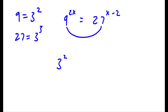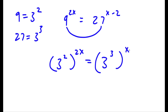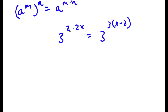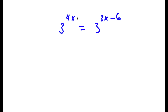So now I get 3 to the power of 2 to the power of 2x is equal to 3 to the power of 3 to the power of x minus 2. Now, if I have something in the form a to the power of m to the power of n, this is equal to a to the power of m times n. So 3 to the power of 2 to the power of 2x becomes 3 to the power of 2 times 2x, which equals 3 to the power of 3 times (x minus 2). So 2 times 2x is 4x, and distributing the 3 on the right: 3 times x is 3x and 3 times negative 2 is negative 6. So I have 3 to the power of 4x is equal to 3 to the power of 3x minus 6.